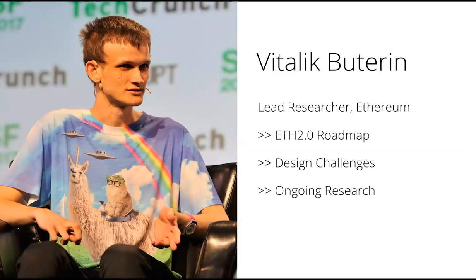I'll start by giving a general overview of what Ethereum 2.0 is and where we're at progress-wise. The basic idea behind Ethereum 2.0 is that it's a major upgrade to Ethereum with two flagship features. Number one is Casper, a proof-of-stake algorithm intended to replace the current proof-of-work mechanism. Number two is sharding, a scalability technology where instead of every computer needing to verify every transaction, each transaction is verified by a small random subset of all validators in the network.